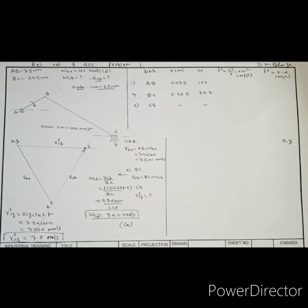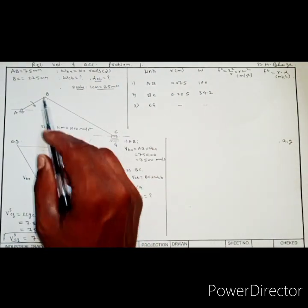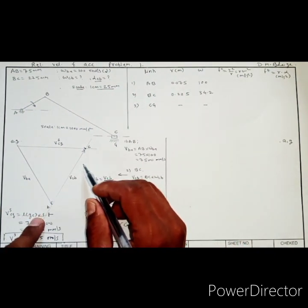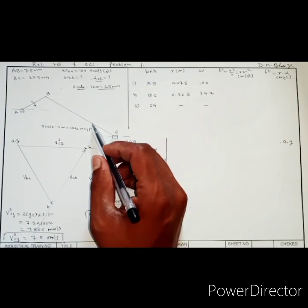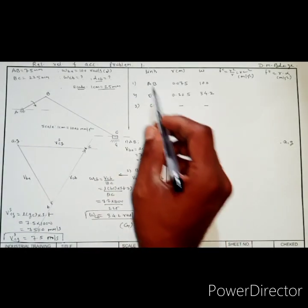Hello everyone. In the last lecture we have seen how to draw the velocity polygon for the slider crank mechanism using the relative velocity and acceleration method. We also determined unknown velocities of connecting rod BC and the velocity of slider from the velocity polygon. In today's lecture we will proceed with the acceleration polygon and learn how to determine the unknown angular acceleration of connecting rod BC as well as the sliding acceleration of slider C.